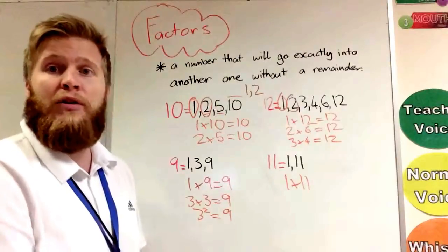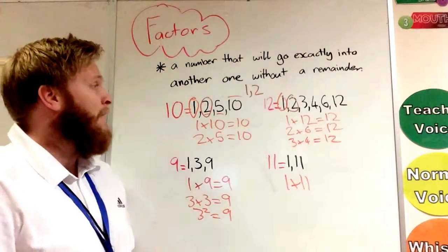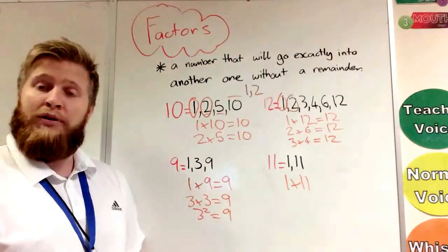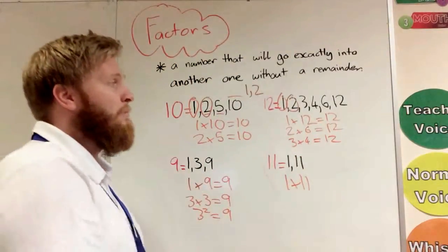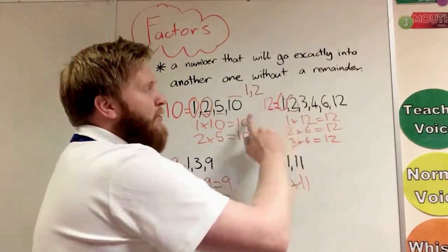See there—1, 1, 1, 1. And then we've got 10 there, 12 there, 11 there, and 9 there. So 1 and the number that you're looking for will always be factors of those numbers. So that can help you out.